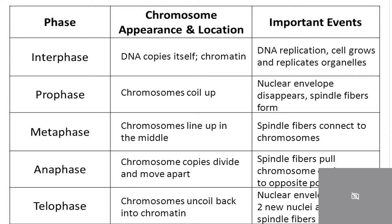In prophase, chromosomes coil up and the nuclear envelope disappears. Spindle fibers form. In metaphase, chromosomes line up in the middle.